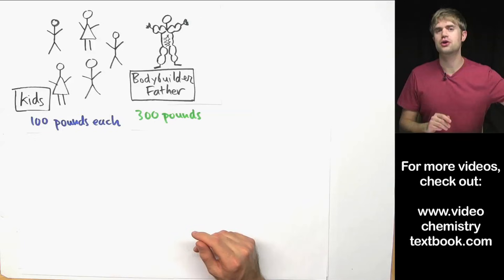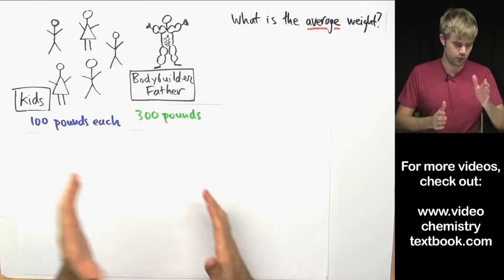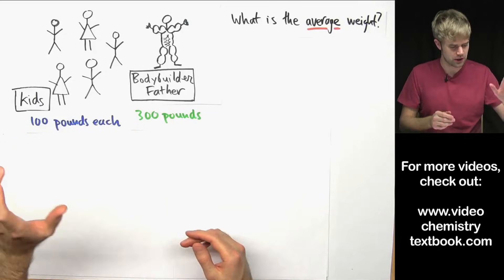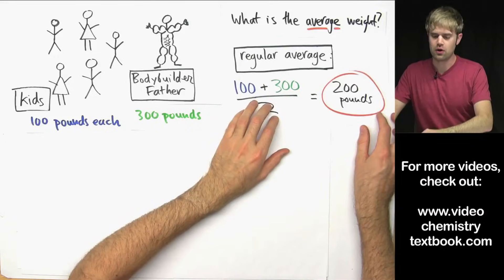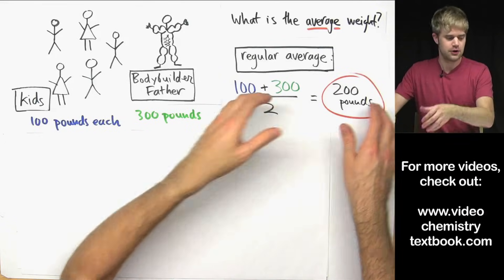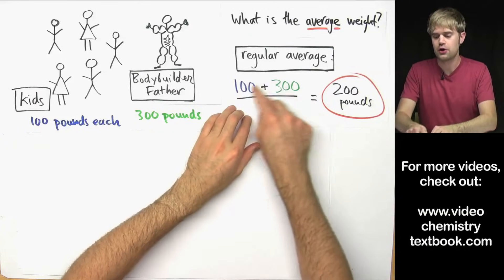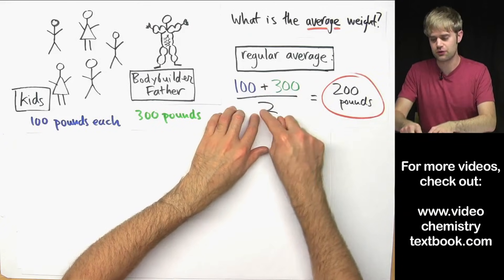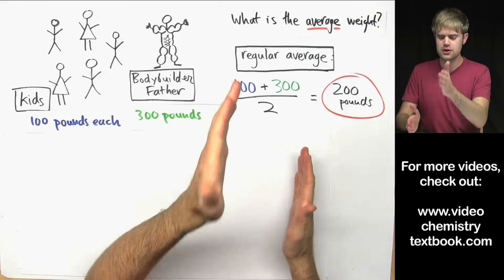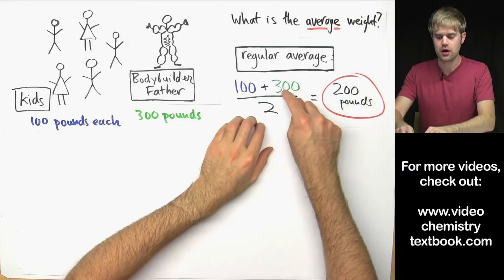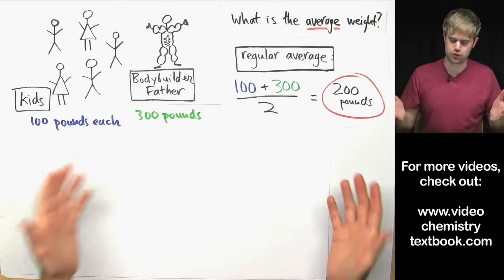We can ask: what is the average weight of this group? We have two different weights — 100 pounds and 300 pounds. You could calculate a regular average: take 100 plus 300, add them together and divide by two because there are two different weights. You get 200 pounds, which is right in between 100 and 300. That's one way to get the average weight: 200 pounds.